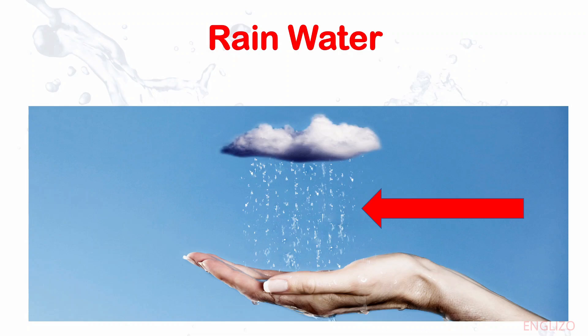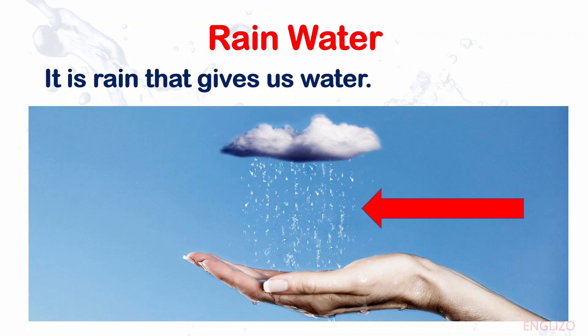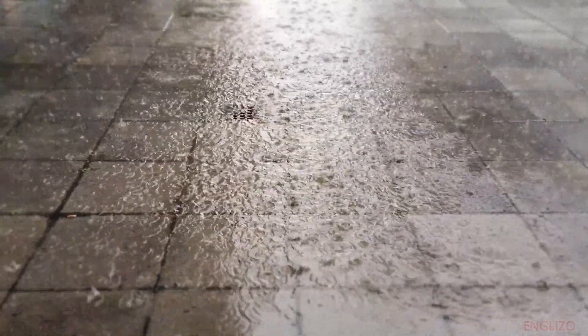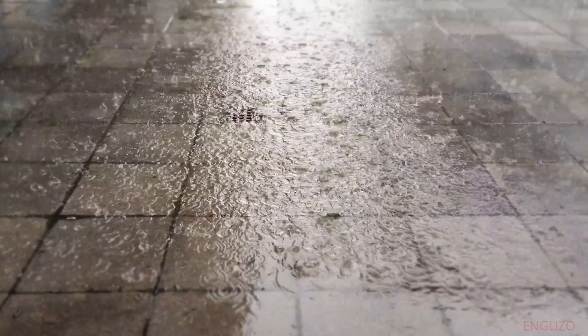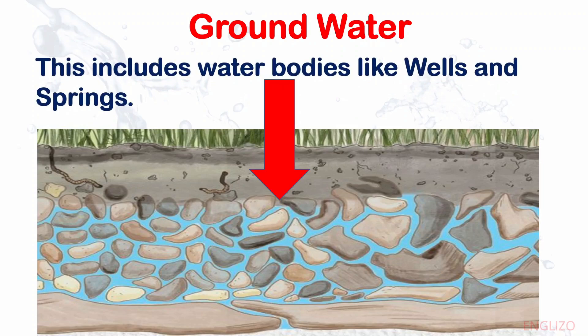Rainwater: It is rain that gives us water. Groundwater: This includes water bodies like wells and springs.